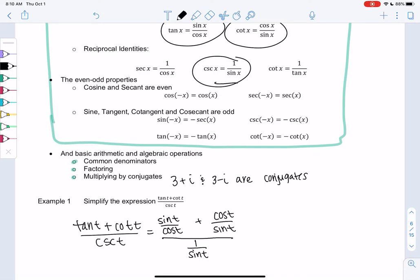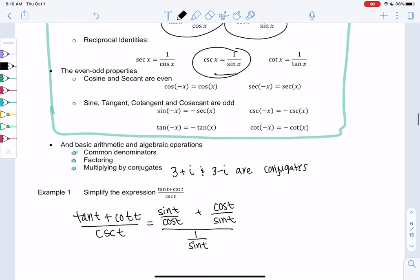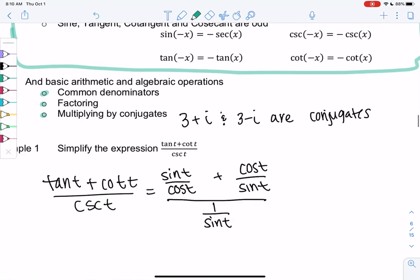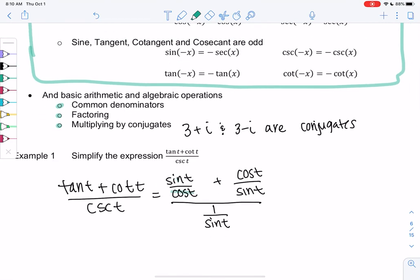And so what are some algebra tricks we could use here? I'm thinking LCD would work. So if I look at all the fractions we have cosine and sine. So LCD would be cosine of t times sine of t. So we're just going to multiply the top and bottom by cosine sine and that's allowed as long as we do it to the bottom as well.